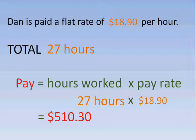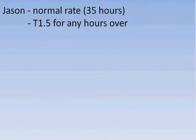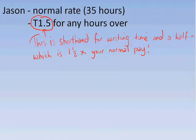The next thing we're going to look at is where overtime comes into the equation. The example here is Jason, who works a normal week of 35 hours. For any time over this, he's getting paid time and a half — T1.5 is a shorthand for time and a half. It means he's going to get one and a half times his normal pay. So if he works one hour over, for that one hour he'll get one and a half times what he usually gets.